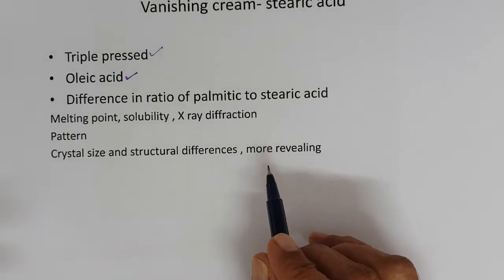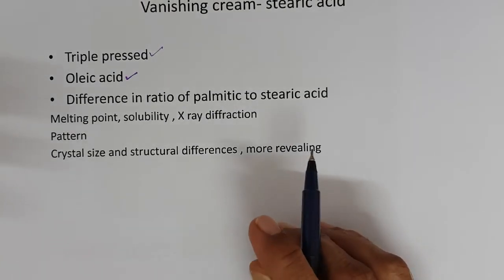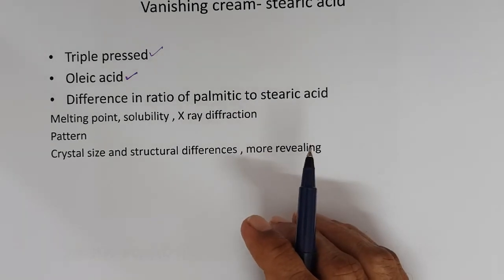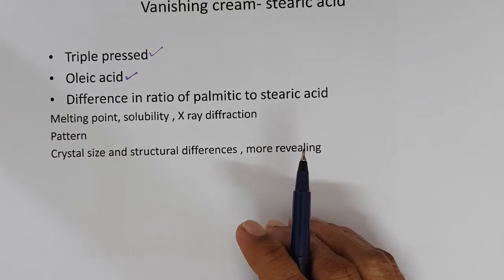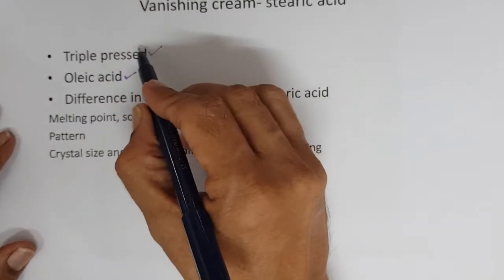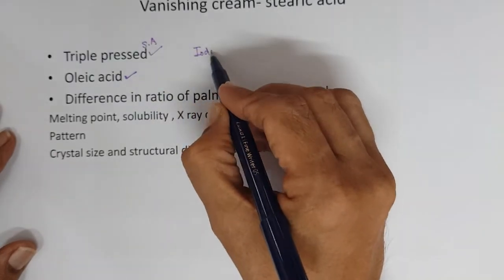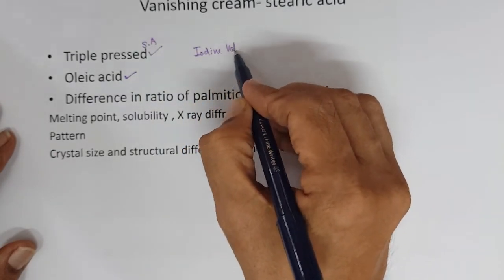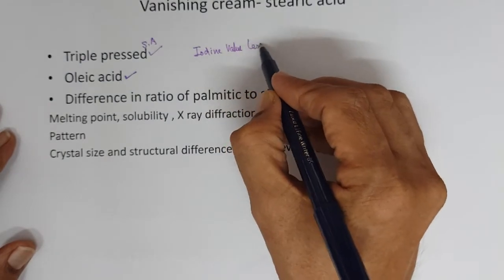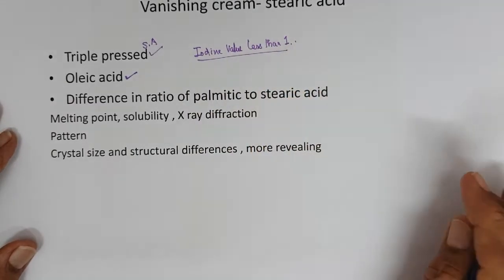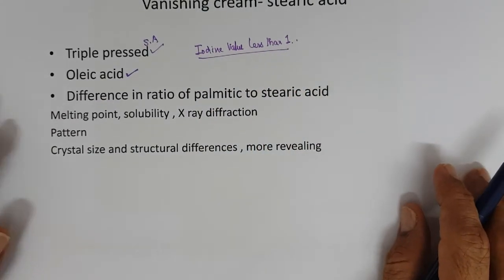The quality of stearic acid that is used in vanishing cream is triple pressed stearic acid. Triple pressed stearic acid has very very low level of oleic acid. Oleic acid is an unsaturated fatty acid. When oleic acid is present, rancidity sets in.